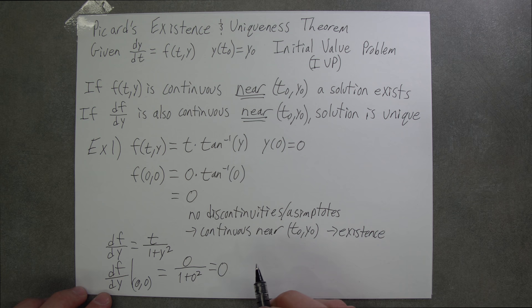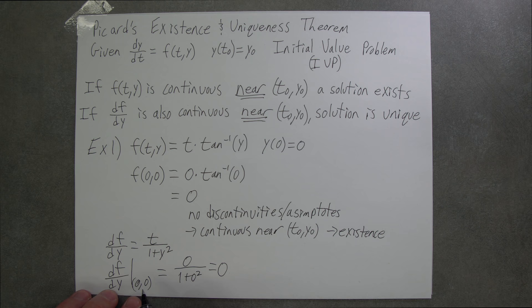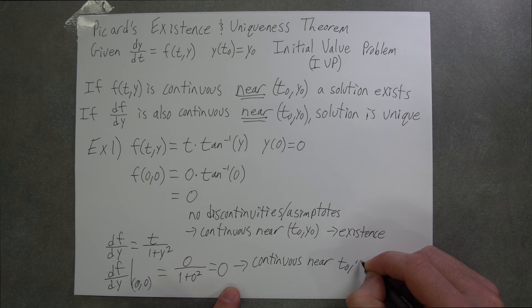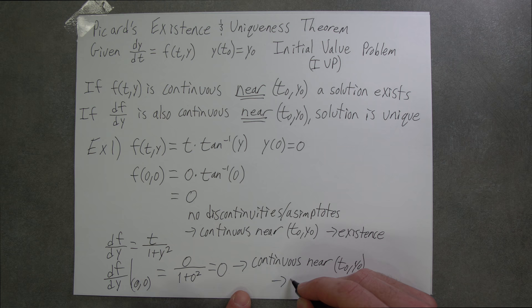Now we know here that there are also no discontinuities or asymptotes near (0,0). So we know it is continuous near (t0, y0). And this shows that we have a unique solution.